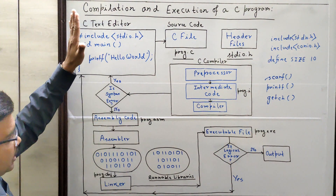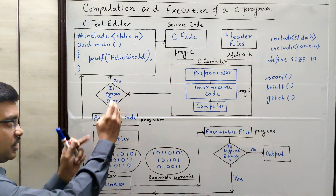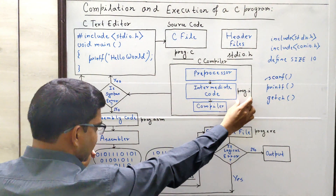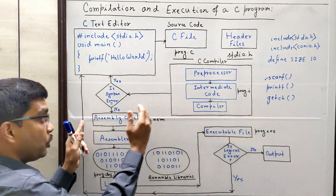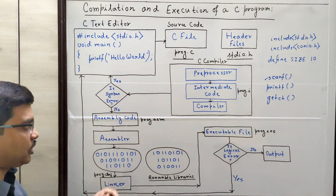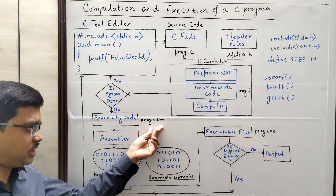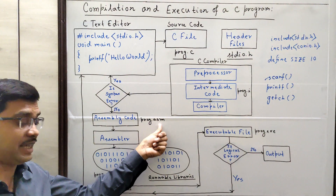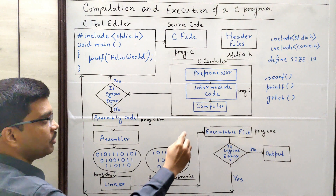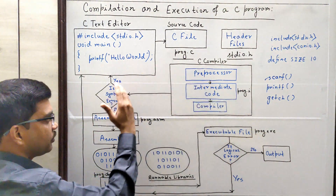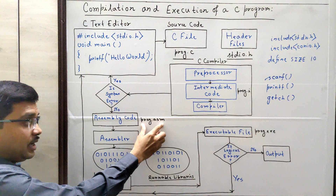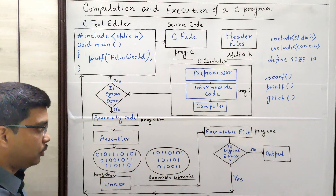Whenever all the syntactical errors get removed — that means no syntactical error is there — then this extended source code, program.i, will now be converted to assembly code. Assembly code is also a low-level language, and it will be saved with the extension .asm, where ASM stands for assembly code. So program.i after successful compilation will be converted to program.asm, which is an assembly level code — a low-level code.